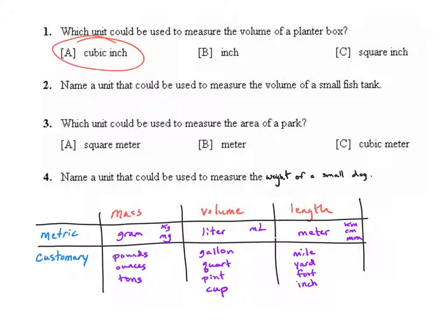Question two says name a unit that could be used to measure the volume of a small fish tank. The keyword there is we're talking about a small fish tank. We can use three-dimensional units of length like cubic inches or cubic feet or cubic yards but if we're talking about the volume of a small fish tank that is a container so we're probably going to be talking units of capacity. A small fish tank is not going to be cups or pints or probably even quarts. A small fish tank is going to be maybe a 10 gallon fish tank. If you were in another country we could refer to it as liters but in the United States the best choice would be gallons.